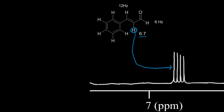Let's look at the neighboring protons. The blue proton is on this carbon, and we have a carbon next door with one proton, so there's one neighboring proton. Here's another carbon next door with one proton, giving us two neighboring protons total. Applying the n+1 rule where n equals two, we would expect two plus one equals three peaks — a triplet. But that's not what we see for the blue proton's signal; we see four lines.